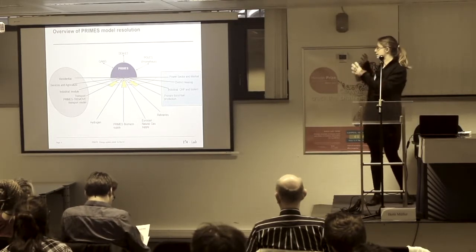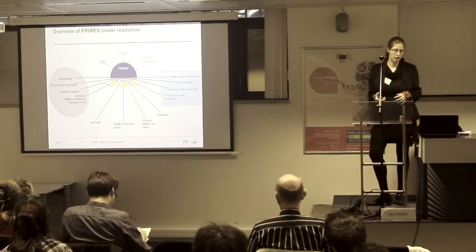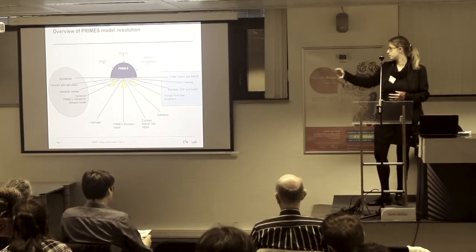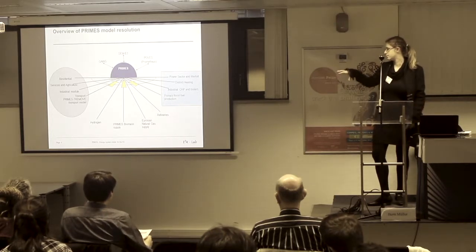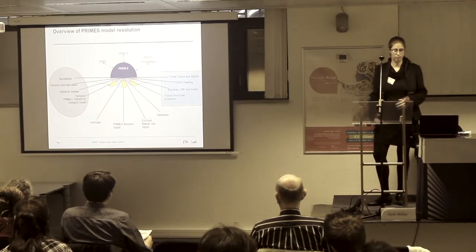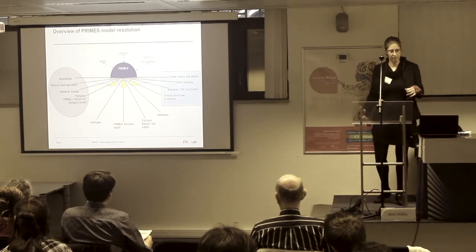These two parts basically go in and are the parts which describe the core part of the PRIMES modeling, whereas the bottom parts are the hydrogen, the PRIMES biomass, the natural gas supply, and the refineries, which run independently but in interaction with PRIMES. Obviously, as was described in here, there are also some things missing, but okay.